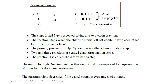In the secondary process, the chlorine atom formed in the primary process reacts with hydrogen gas to form hydrogen chloride and a hydrogen atom. In the third step, the hydrogen atom formed in the second step reacts with the chlorine molecule, giving hydrogen chloride and a chlorine atom. These two steps — step 2 and step 3 — get repeated, giving rise to a chain reaction.